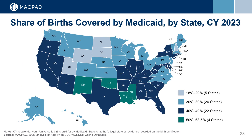On this map, we show the share of births covered by Medicaid by state in calendar year 2023, which ranges from 18% to 63.5%. In five states, Medicaid financed less than 30% of births. In 42 states, Medicaid financed between 30 and 49% of births. And in four states, Medicaid financed over half the births in the state.